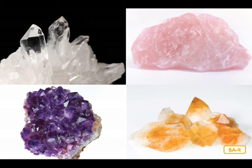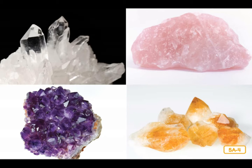As for the color variations in different types of quartz, these are largely caused by the addition of very small amounts of various types of metals into the mineral. For instance, the beautiful purple color of amethyst is caused by traces of iron and aluminum metal. Traces are very small amounts.